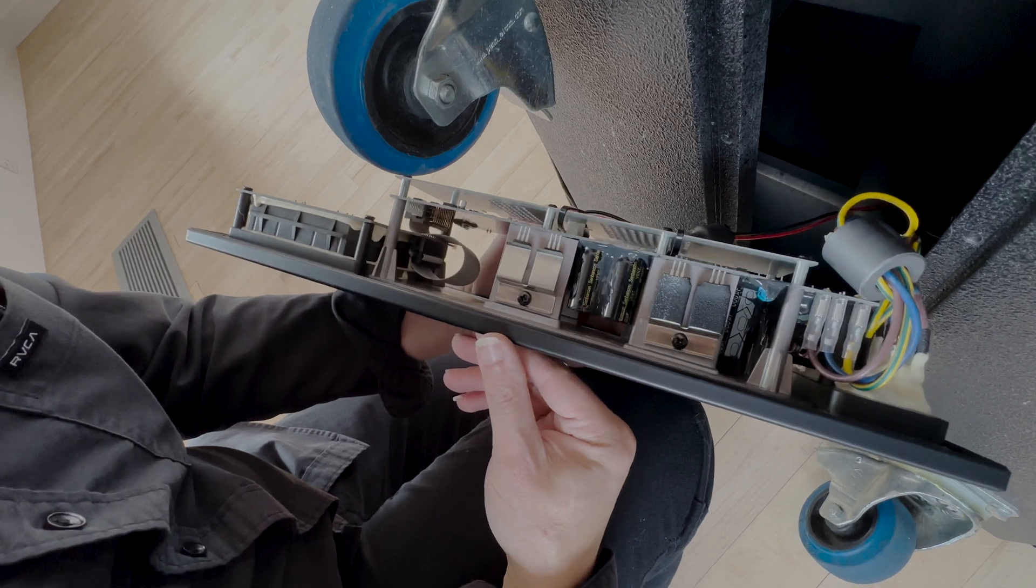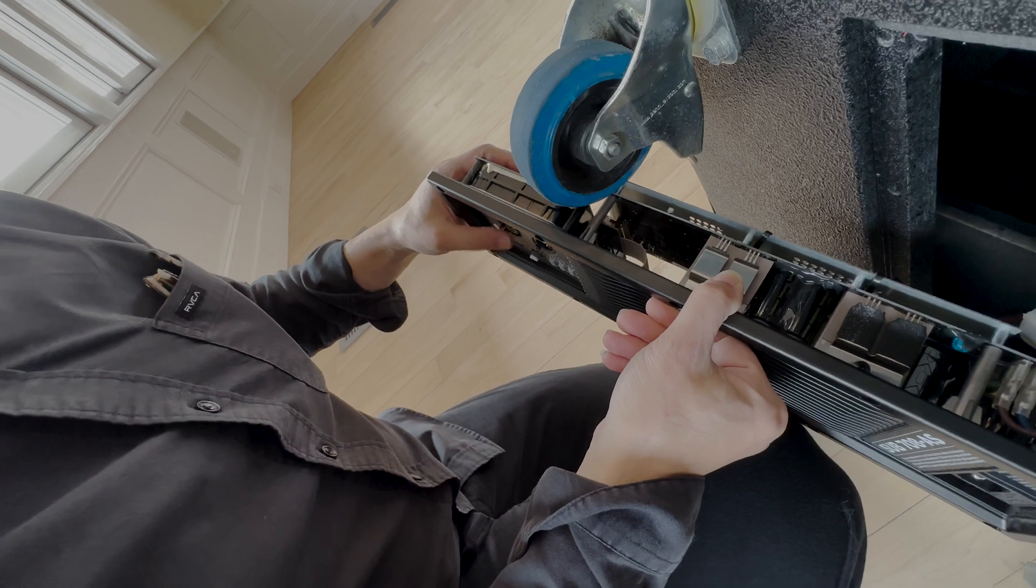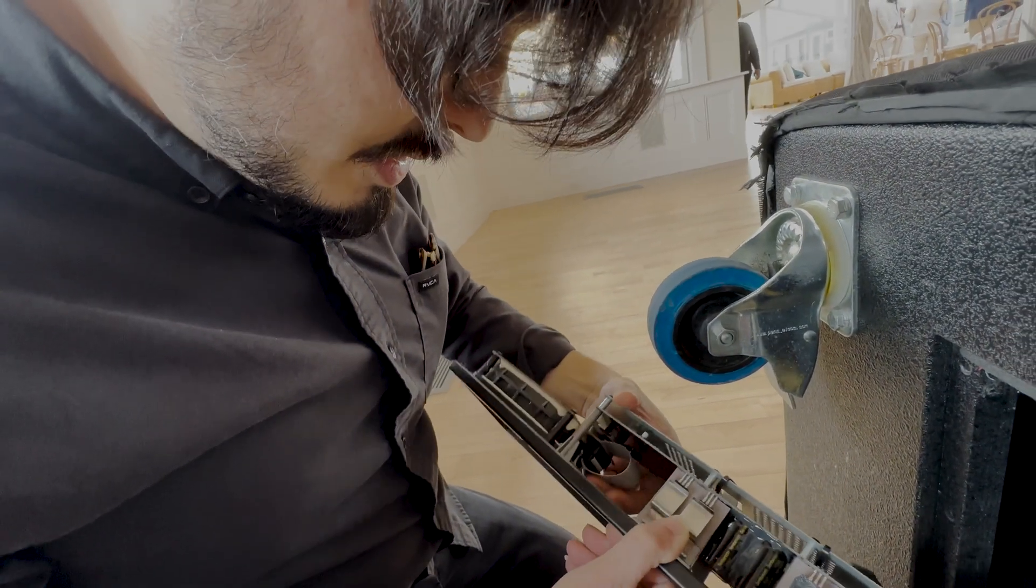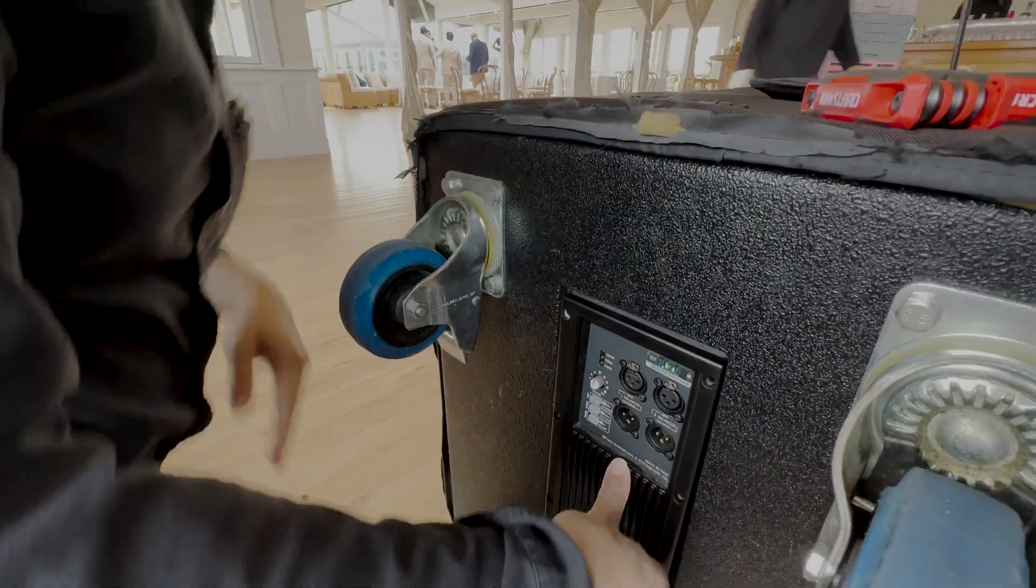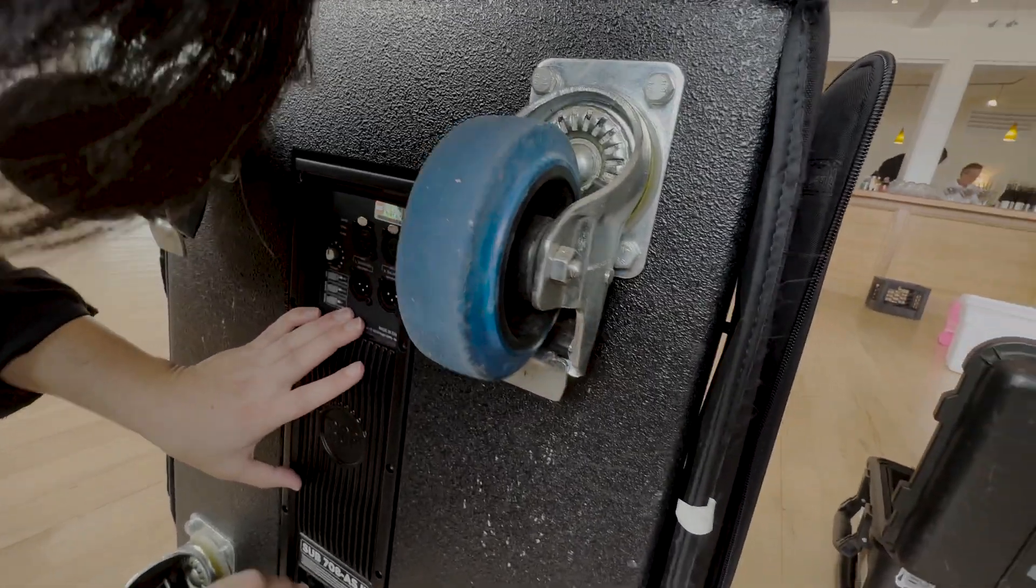So this ribbon connector, what this does is it connects the input section to the power board and to the amplifier module. We'll just gently set this in like this and we'll see if this fixes our problem here.